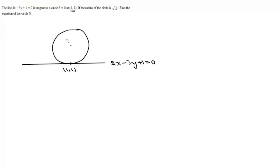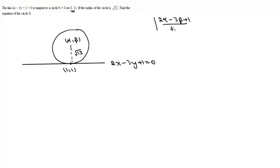Let the center be (α, β) and the radius is root 13. We know that the perpendicular distance from the center to a tangent equals the radius, so we can write: |2α − 3β + 1| / √13 = √13. This is our first equation.